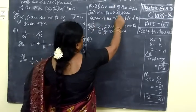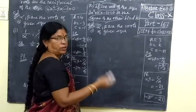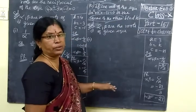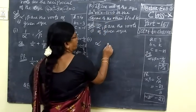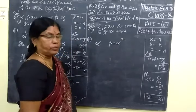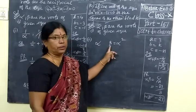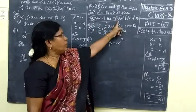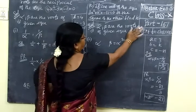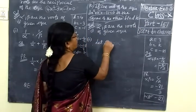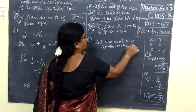What we need to note is that one root is the square of the other. Let the two roots be alpha and beta. Since one root is the square of the other, let one root equal alpha and another root equal alpha squared. So beta equals alpha squared.